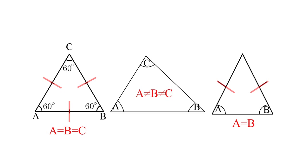The good thing about triangles is that although you have these three different types, the angles within any triangle all add up to 180 degrees. It doesn't matter if it's an isosceles, equilateral, or scalene triangle — the angles will always add up to 180 degrees. This information makes it fairly easy to find the value of missing angles within a triangle, and we're going to do a few examples now.